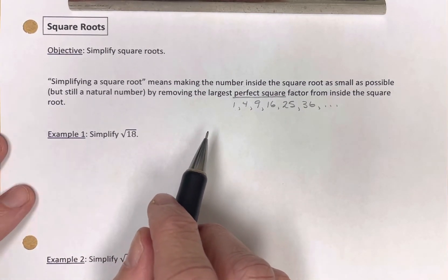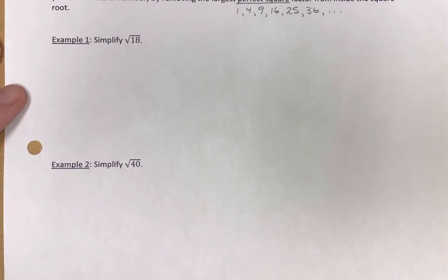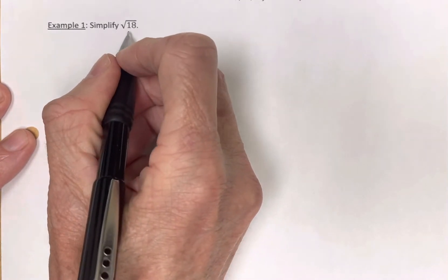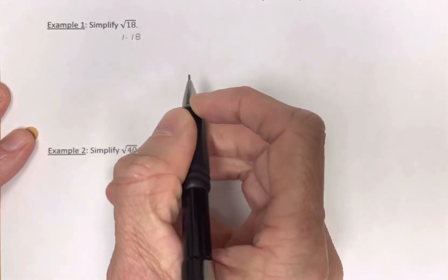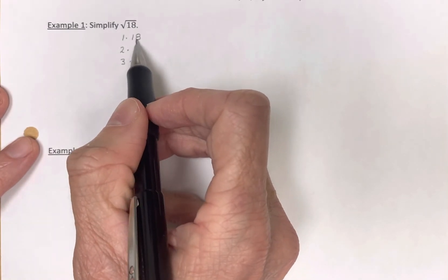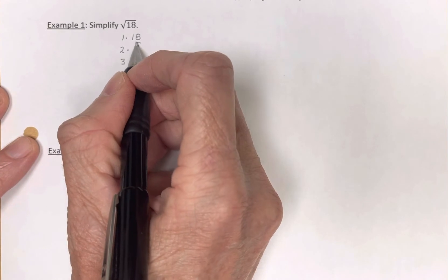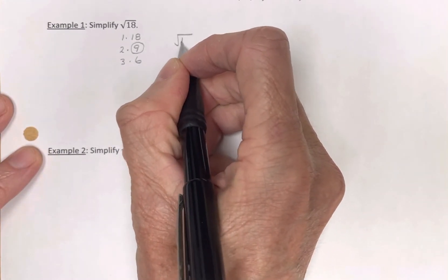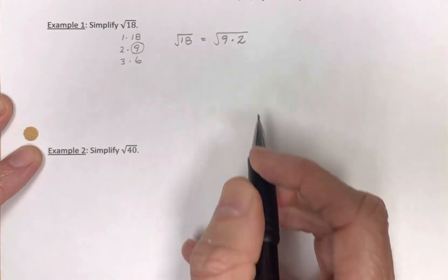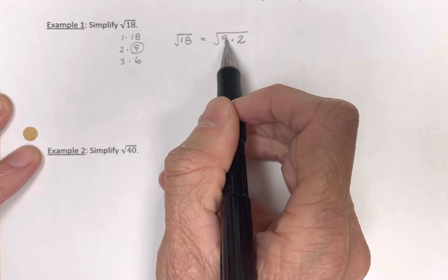So how do we do this? We want to remove the largest perfect square factor. Let's do some examples. Simplify the square root of 18. Well, 18 is 1 times 18, 18 is 2 times 9, and 18 is 3 times 6. Those are the three ways we can write 18 as a product of two numbers. We're looking for our largest perfect square factor. In this case, it's 9. So we're going to rewrite the square root of 18 as the square root of 9 times 2, putting the largest perfect square factor first.